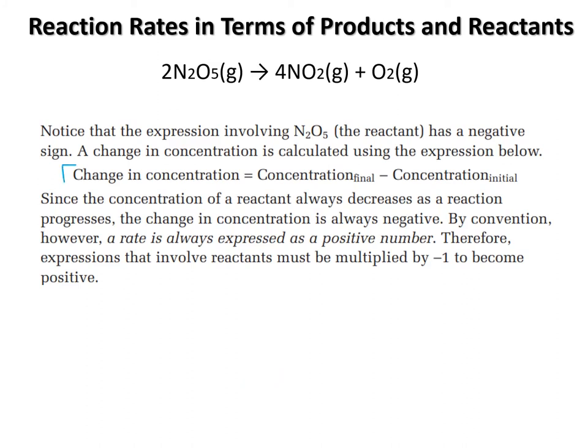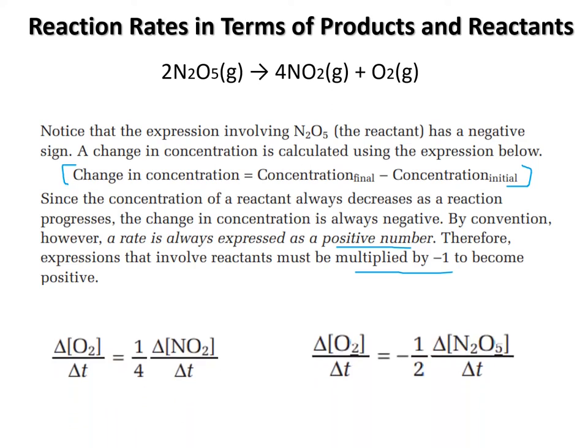So notice the expression involving the NO2 reactant has a negative. This is essentially what I was just explaining here. You've got your change in concentration as your final minus your initial. And by convention, we're after a positive value. So you multiply by negative one here. And that's what we did on the earlier slide. Bottom line is all your answers need to be positive. So do what you need to do to make it positive in the end. Take a negative, make it positive.